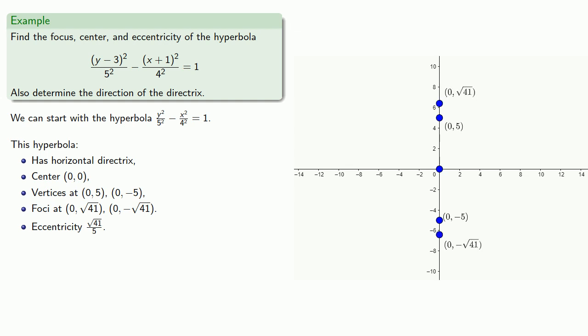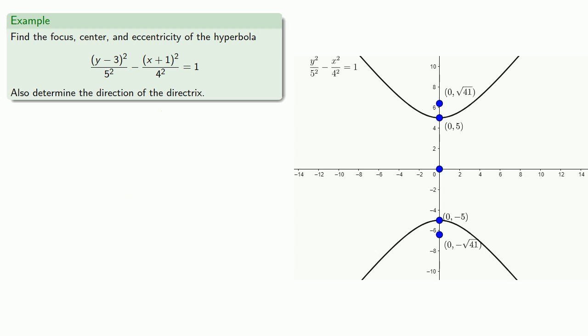Since we know where the vertices and the foci are, we can draw the two branches of the hyperbola. Well, that's great. We now know everything there is to know about the hyperbola y²/5² - x²/4². But this isn't that hyperbola.